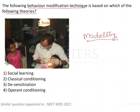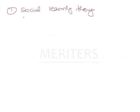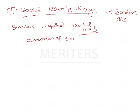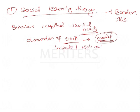Let us have a look at each of the options one by one. The first option is the social learning theory, which was given by Bandura in 1963. His theory is based on the fact that behavior is acquired through social needs — it is motivated by social needs, and our behavior is shaped by the events happening around us, by observation of a model, and by trying to imitate or replicate the behavior that the model displayed.